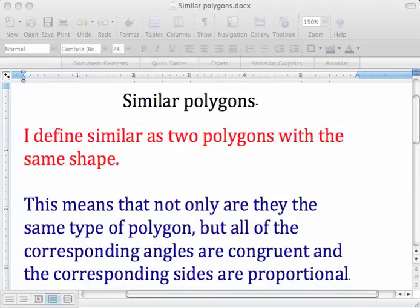This in fact means that not only are they the same type of polygon, like a triangle, rectangle, pentagon, etc., but all of the corresponding angles are congruent and all of the corresponding sides are proportional.